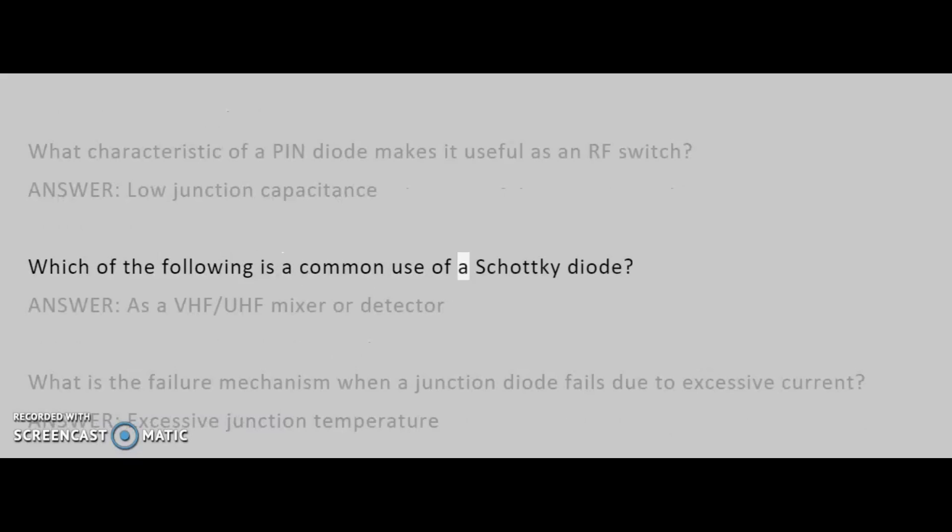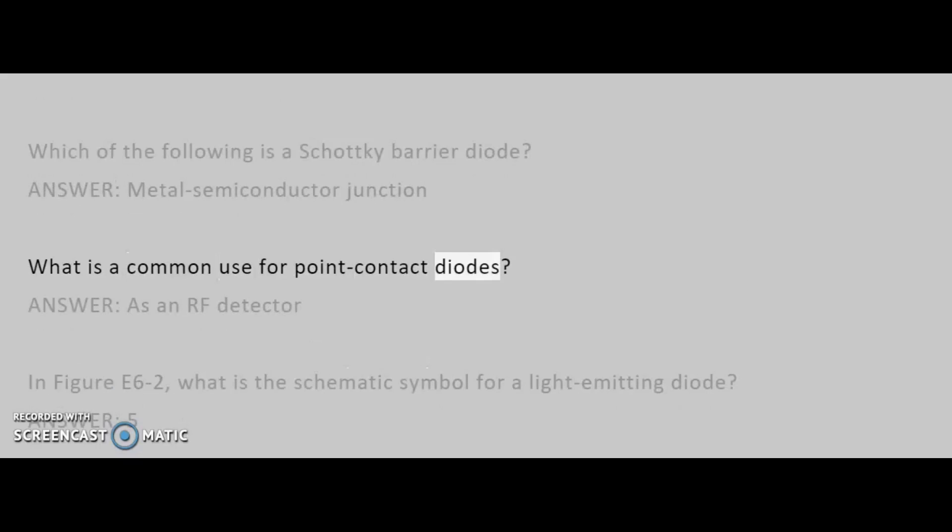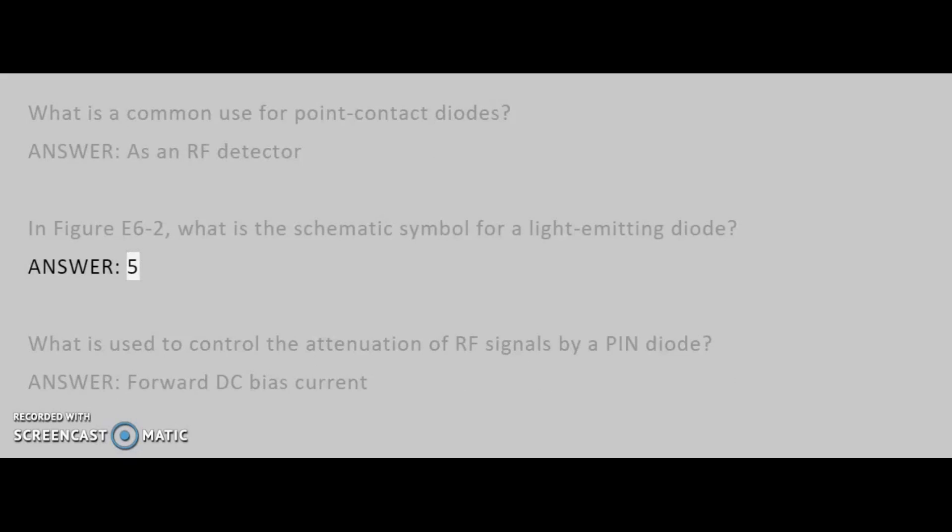Which of the following is a common use of a Schottky diode? Answer: as a VHF-UHF mixer or detector. What is the failure mechanism when a junction diode fails due to excessive current? Answer: excessive junction temperature. Which of the following is a Schottky barrier diode? Answer: metal semiconductor junction. What is a common use for point contact diodes? Answer: as an RF detector. In figure 6-2, what is the schematic symbol for a light-emitting diode? Answer: 5. What is used to control the attenuation of RF signals by a pin diode? Answer: forward DC bias current.